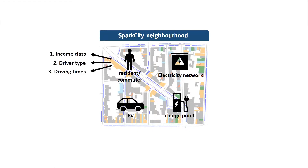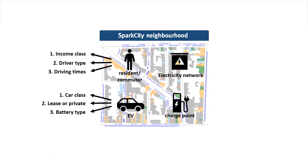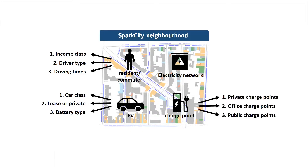Residents and commuters are characterized by their income class, driver type, and the times that they use their electric vehicle for driving. Electric vehicles are characterized by their class, whether they are lease or private owned vehicles, and by their battery type. Residents or commuters can use their electric vehicles to make leisure trips, weekend trips, or work trips depending on their type of behavior. All this data is gathered from the CBS. The charge points in the neighborhood are private, office, or public charge points, and depending on the type of parking space a specific type of charge point is installed.